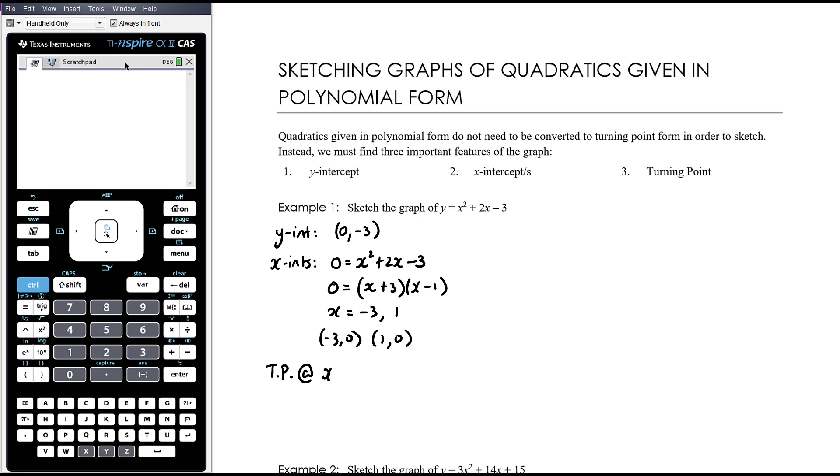So the turning point is at x equals, we're averaging our two x-intercepts, and then that means that y is going to equal, so I'm subbing x equals negative 1 into the equation to work out what does y equal. Negative 1 squared plus 2 times negative 1 minus 3. So that's 1 minus 2 minus 3, 1 minus 5, that's negative 4. So my turning point is at negative 1, negative 4. So we've got everything we need.